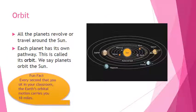Revolution and Orbit. All the planets revolve or travel around the sun. Each planet has its own pathway. This is called its orbit. We say planets orbit the sun.